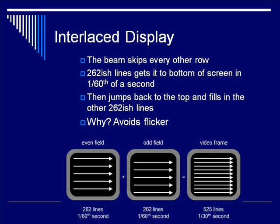In an interlaced display, the beam skips every other row. So the beam sweeps across row one, then row three, then row five, all the way down the TV. It goes around 262 lines like this before it gets to the bottom of the screen, and it does this in about 1/60th of a second.